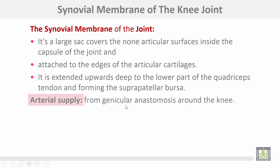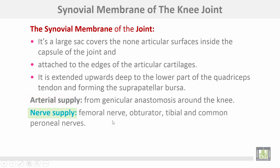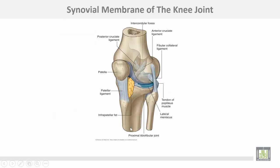Arterial supply of the joint comes from the genicular anastomosis around the knee joint. The nerve supply comes from the femoral nerve, obturator nerve, tibial nerve, and the common peroneal nerves. This is the synovial membrane, which covers non-articular surfaces of the joint.